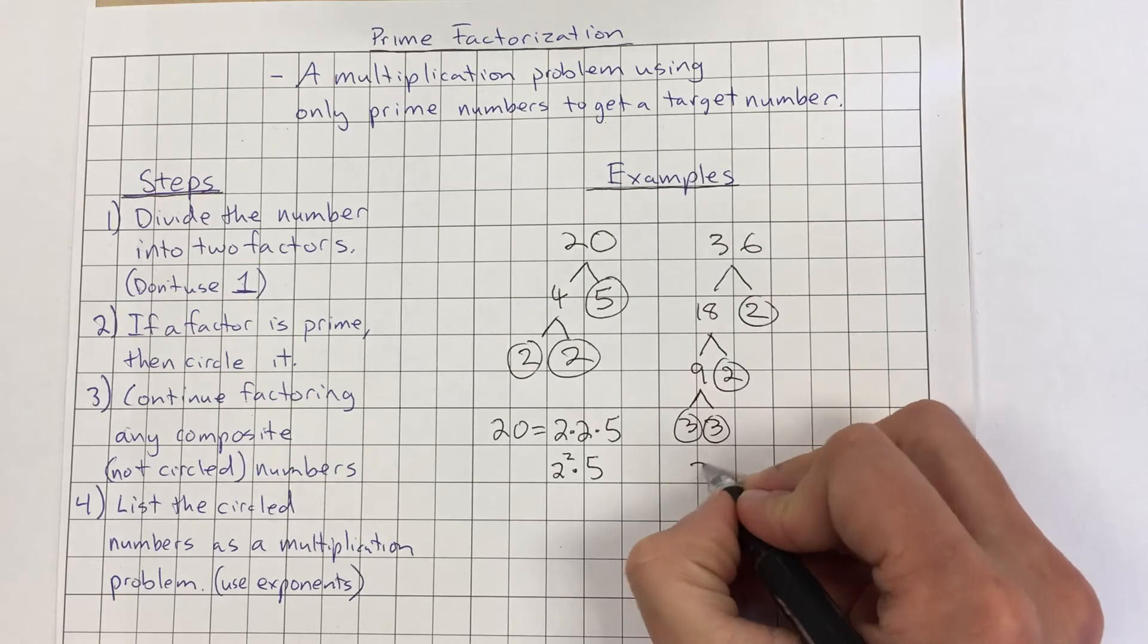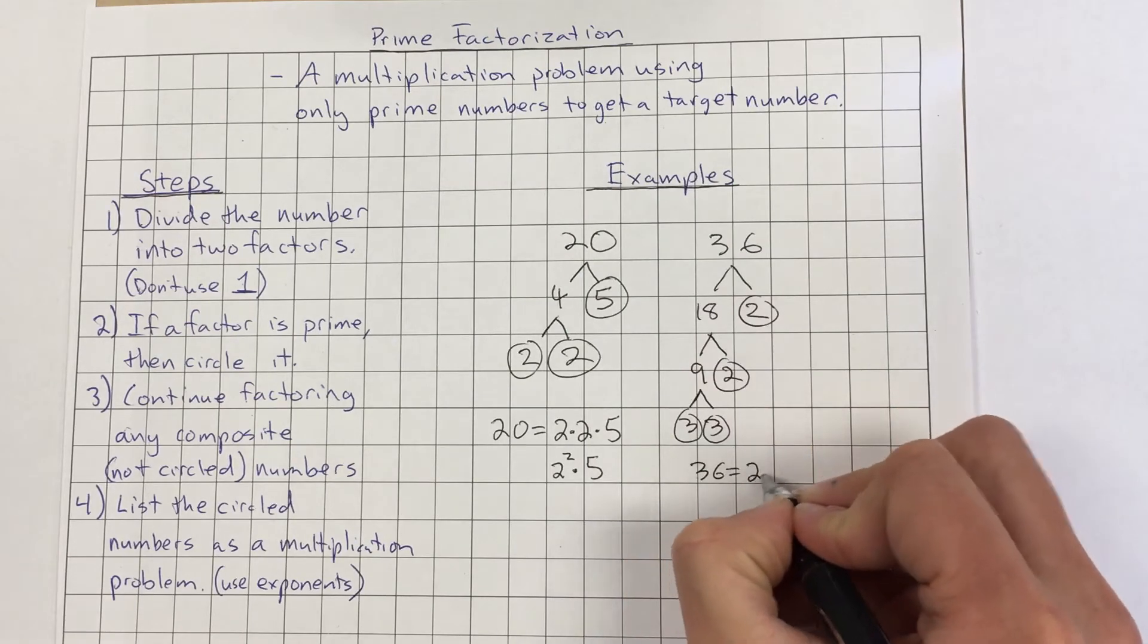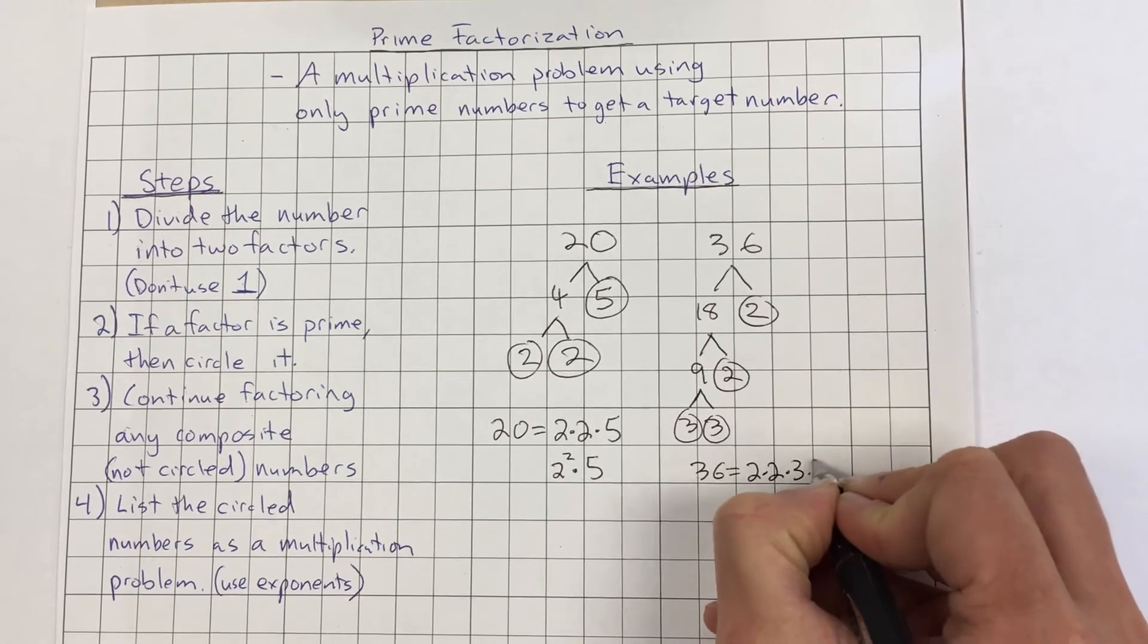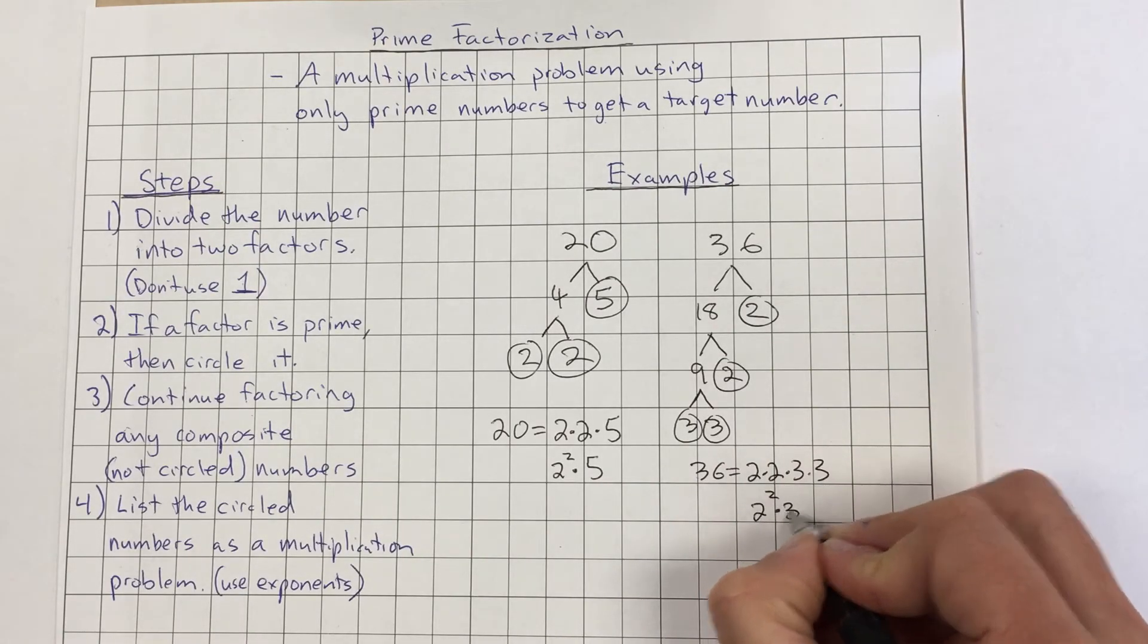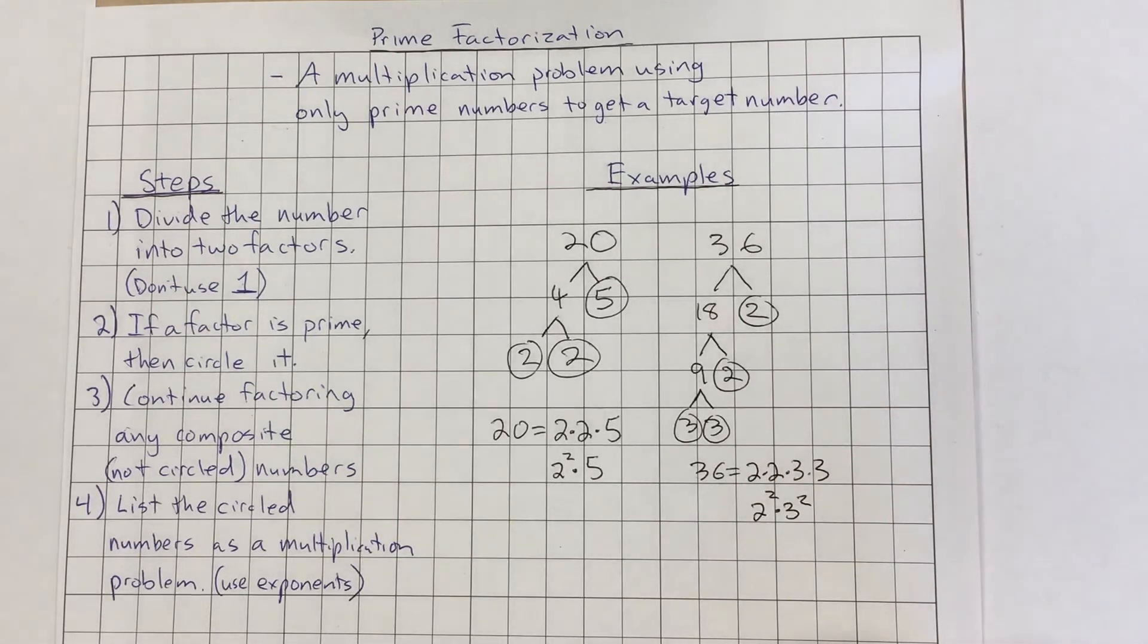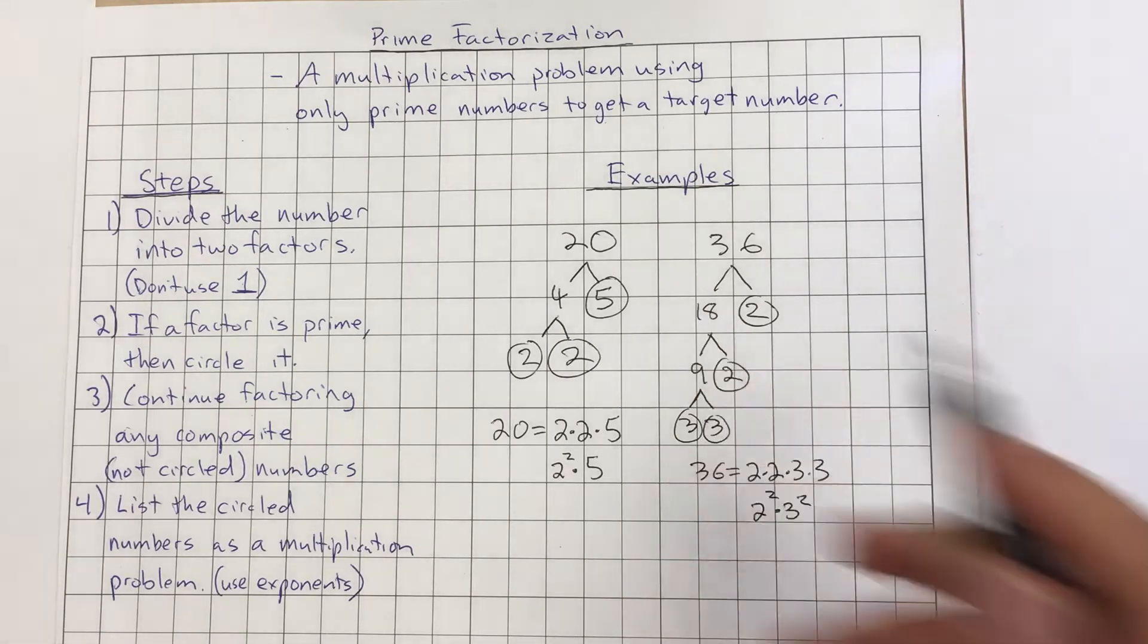So now we just simply write it out as a multiplication problem. 36 equals 2 times 2 times 3 times 3. Or if we use exponents, we could say 2 squared times 3 squared. So that is all it is when we're finding the prime factorization. That's the multiplication problem using just prime numbers to get that.